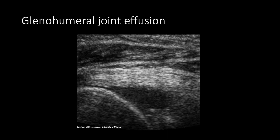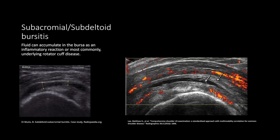This is an example of glenohumeral joint effusion. We can see an anechoic region deep to the tendon at the glenohumeral joint. On the left, we have fluid within the potential space known as the subacromial subdeltoid bursa, which is commonly associated with rotator cuff full thickness tears. On the right, we have complex fluid within the subacromial subdeltoid bursa with surrounding pronounced hyperemia and bursal thickening.